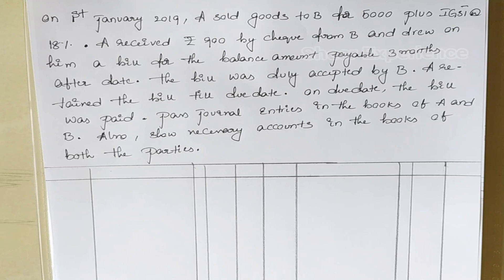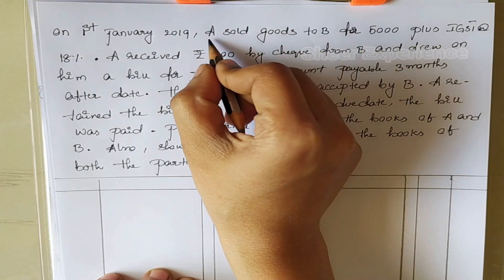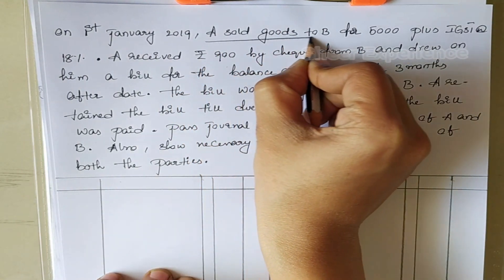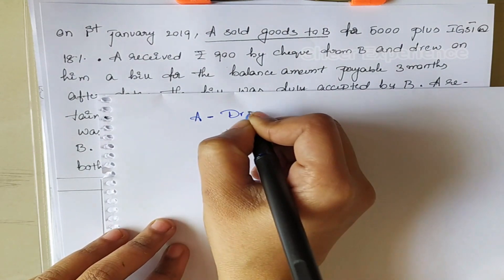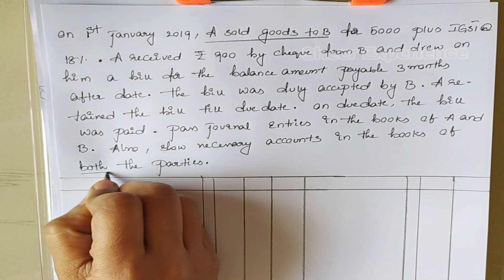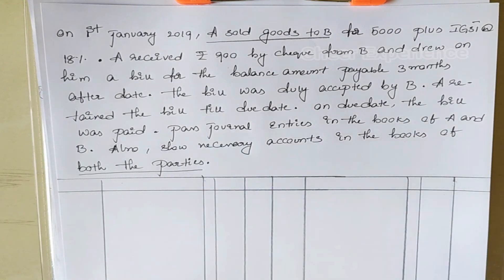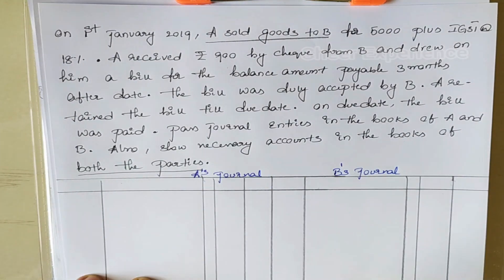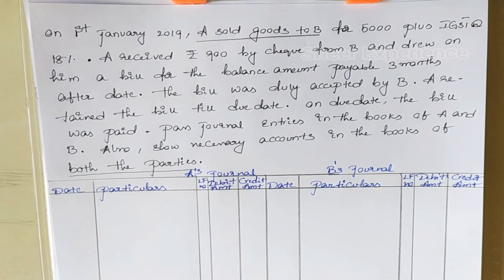Pass general entries in the books of A and B, also show necessary accounts in the books of both the parties. In the question, A sold goods to B, which means A is the drawer and B is the drawee. Also we are asked to show the necessary accounts in the books of both the parties. Let's prepare the journal entries in the books of A and B.